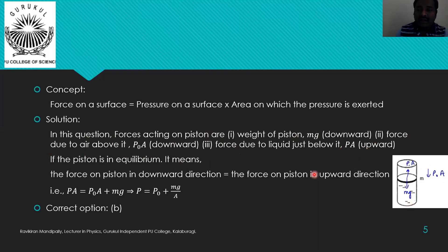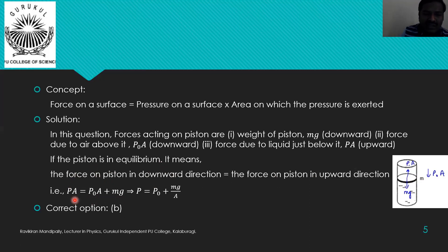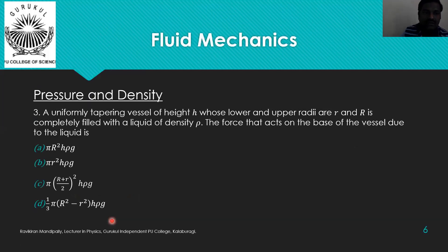For the piston in equilibrium: p·A = p0·A + mg. Dividing through by A gives p = p0 + mg/A. The correct option is option B. Moving to the third question: a uniformly tapering vessel of height h, with lower radius r and upper radius R, is completely filled with a liquid of density ρ. The force acting on the base of the vessel due to the liquid is being asked.